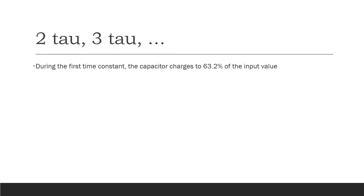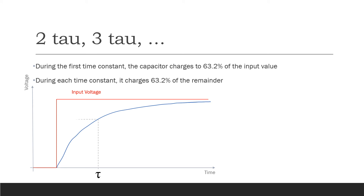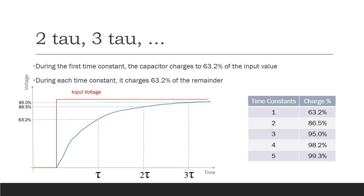During the first time constant, the capacitor charges to 63.2% of the input value. During each subsequent time constant, the capacitor charges 63.2% of the remainder between where it is and the input value. So after one time constant it's at 63.2%, after two time constants it's at 86.5%, after three it's at 95%, after four it's at 98.2%, and after five time constants it's at 99.3% of the way to the final value.